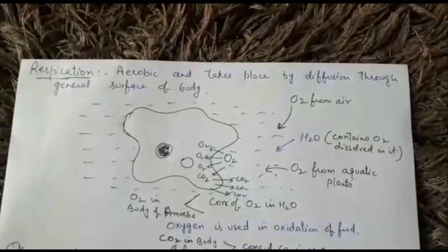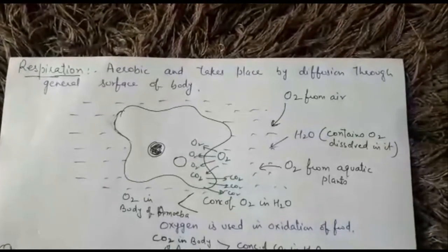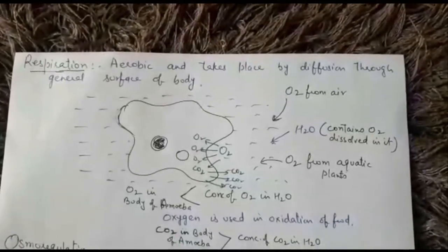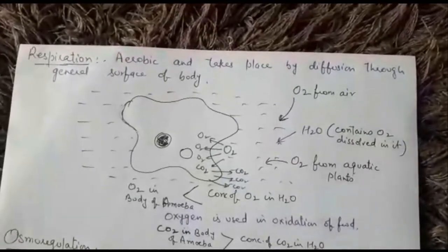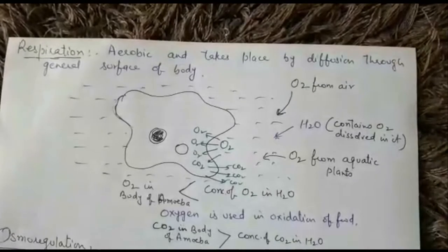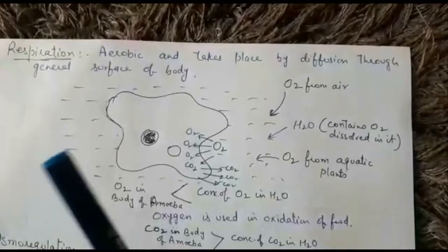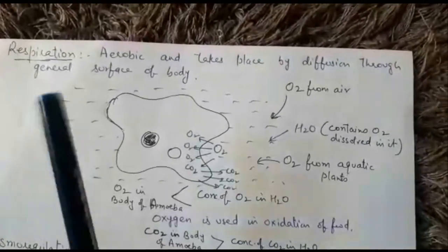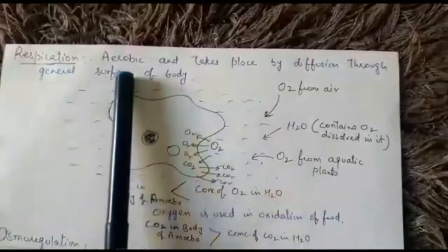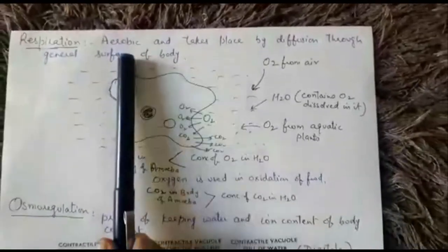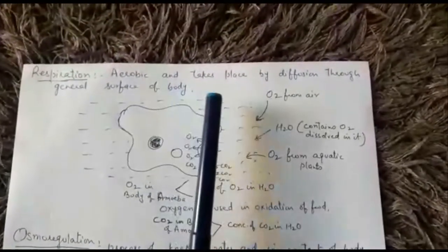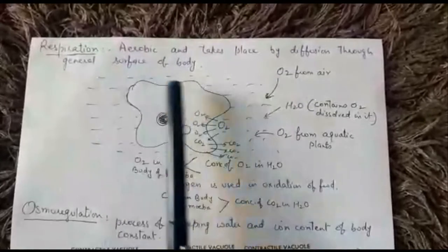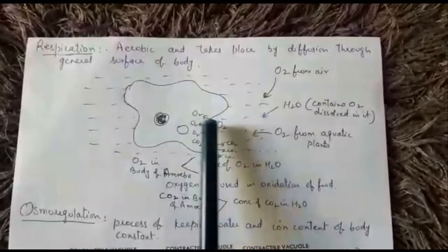Hello, hope you all are okay. We were studying amoeba and doing physiological activities of amoeba. The next physiological activity is respiration — how amoeba respires. Respiration in amoeba is aerobic. Aerobic means respiration occurs in the presence of oxygen. Respiration takes place by diffusion through the plasma membrane.